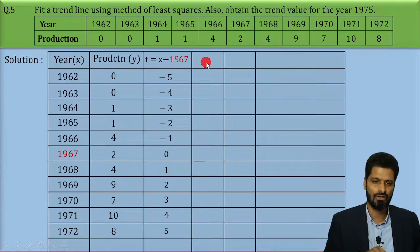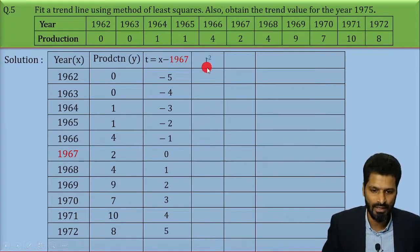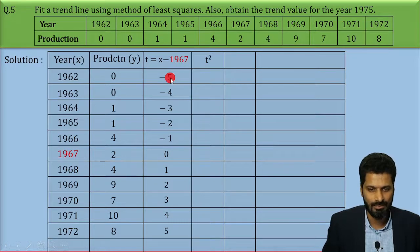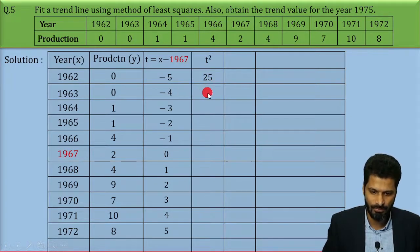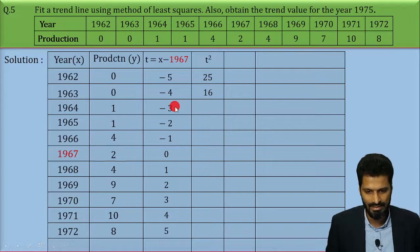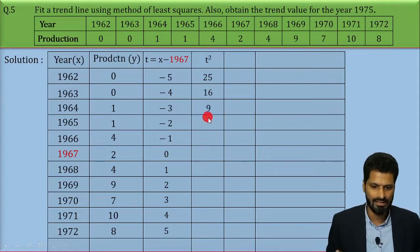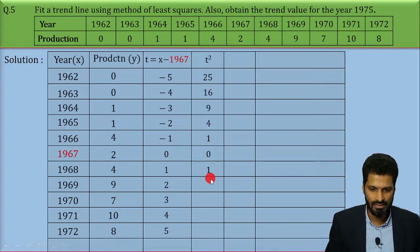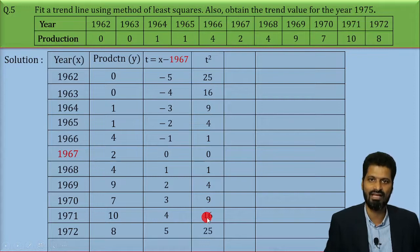In the next column we have to find t squared. T squared values will be: (−5)² = 25, (−4)² = 16, (−3)² = 9, and similarly 4, 1, 0, 1, 4, 9, 16, and 25.